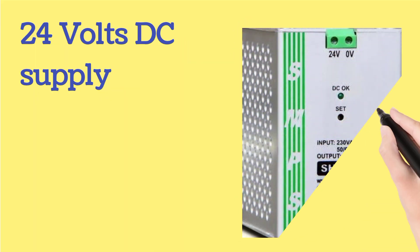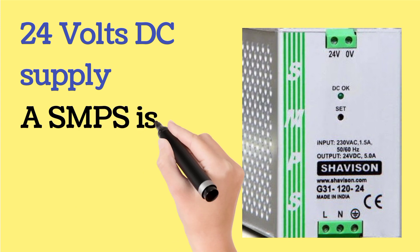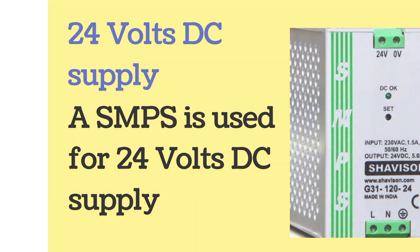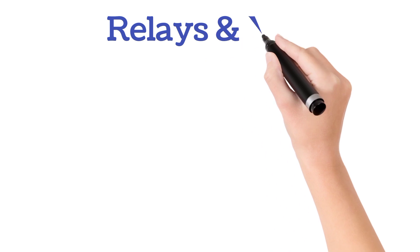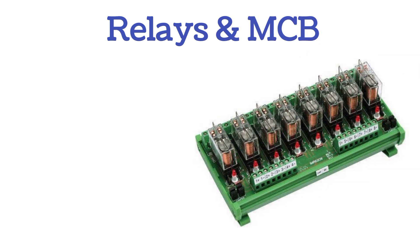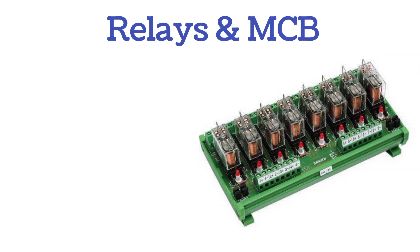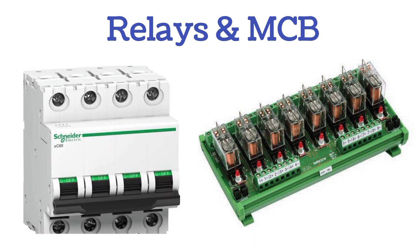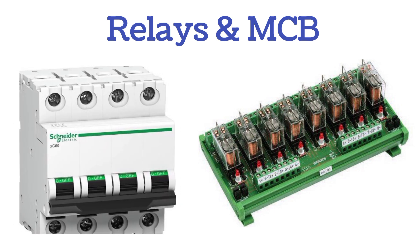Now we'll discuss the 24 volts DC supply. A SMPS is used for the 24 volts DC supply. On the transmitters, relays and MCBs are there at the front side of the PLC panel. Relays are used to start the motor using VFD.